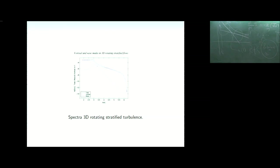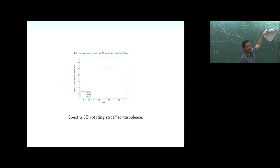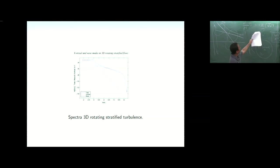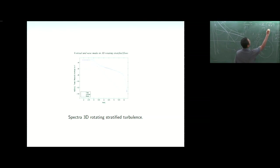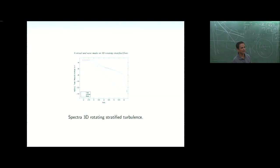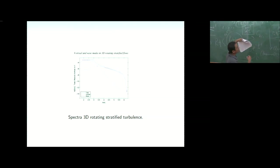This Rossby-wave momentum flux view of jets is complementary to the turbulence picture. It leads to the Transformed Eulerian Mean (TEM) framework, developed in the 1970s and 80s by many researchers. In the tutorial we will try to derive the eddy momentum flux equation and the TEM, and you can try deriving it for shallow water equations as well.